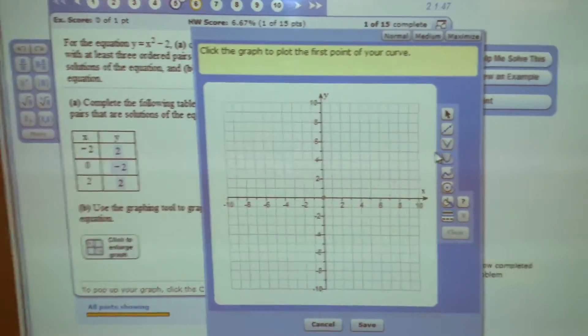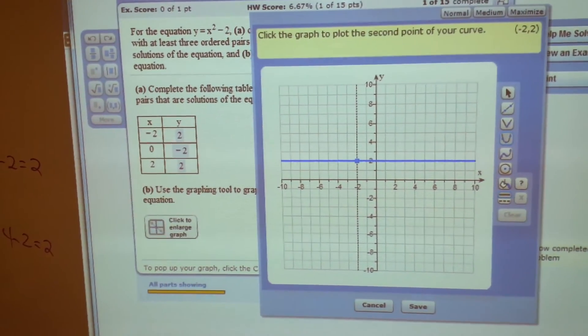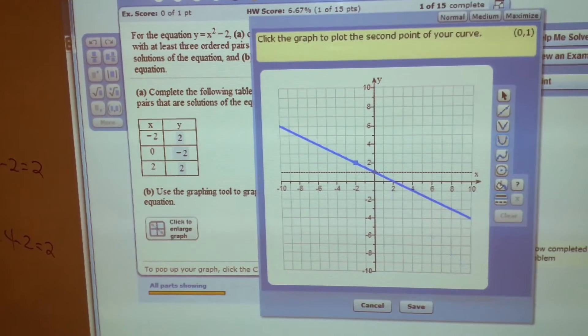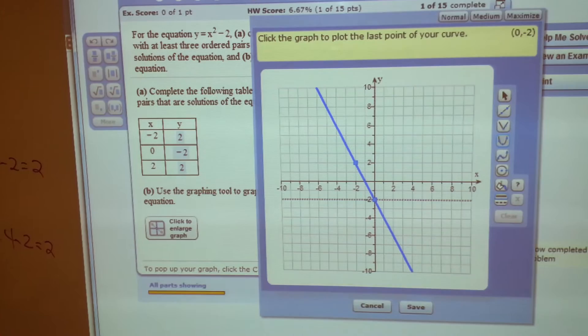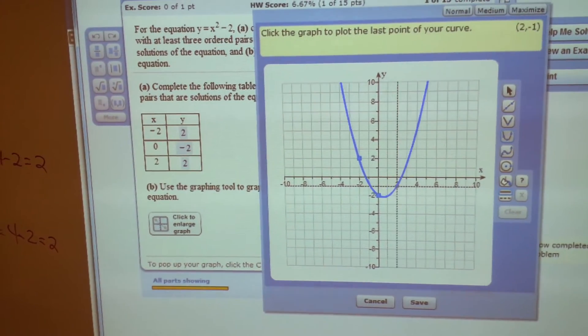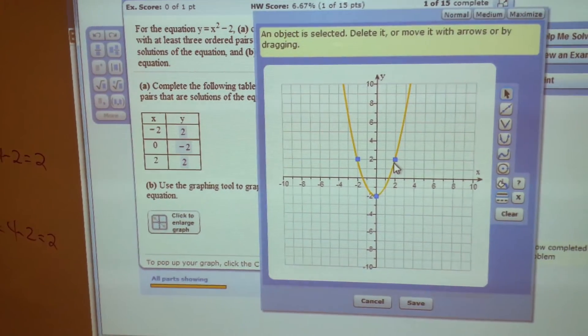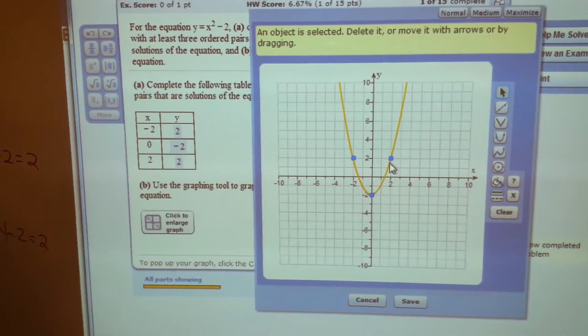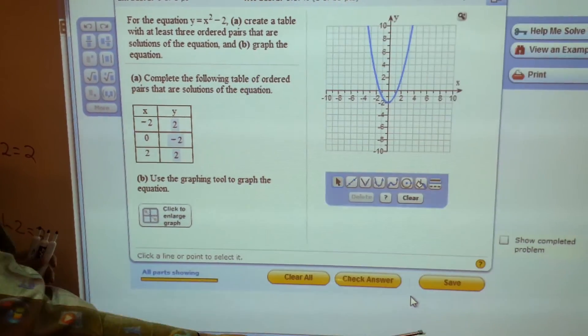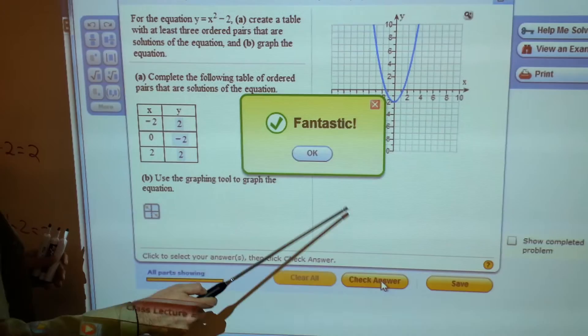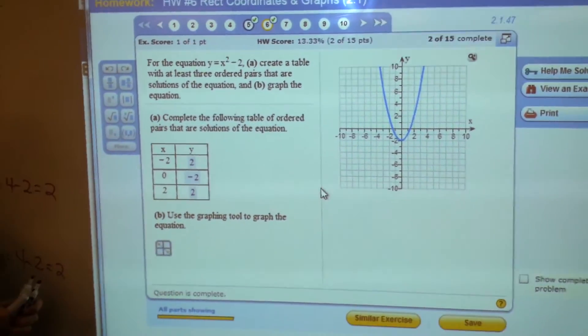And you're just going to click the three points. Left 2, up 2. There's the first point. Over 0, down 2. There's the second. Right 2, up 2. Click the three points. Save it. Check it. And that is a three-point quadratic.